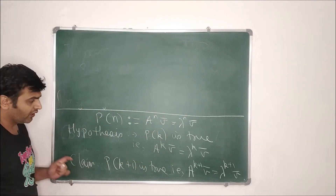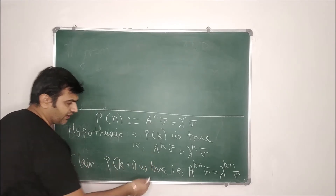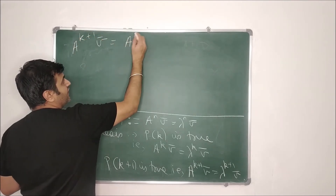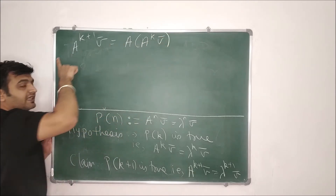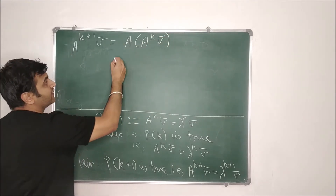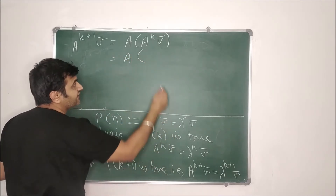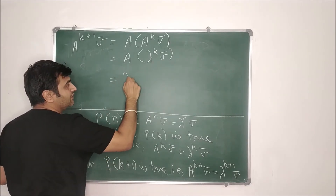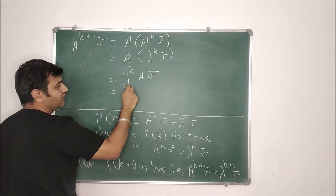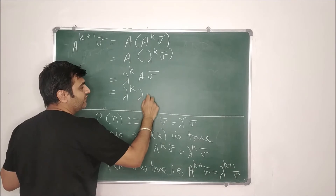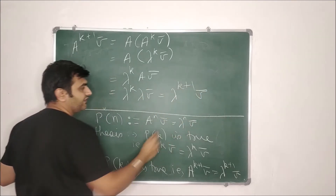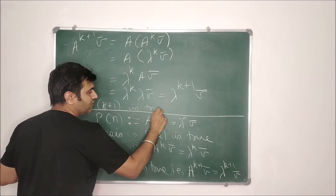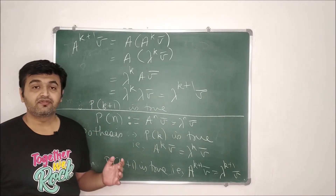The proof is very easy — it's essentially a one-line proof. Starting from the left-hand side: A^(k+1)·V̄ = A·(A^k·V̄). By the induction hypothesis, A^k·V̄ = λ^k·V̄. Since λ^k is a scalar, it comes outside, giving A·(λ^k·V̄) = λ^k·(A·V̄). But A·V̄ = λ·V̄ is given, so this equals λ^(k+1)·V̄. Therefore P(k+1) is true, and by induction P(n) is true.